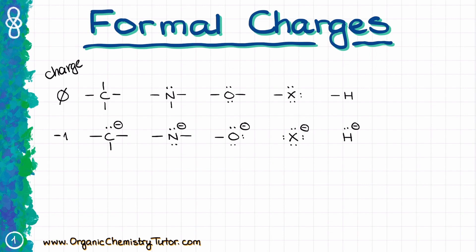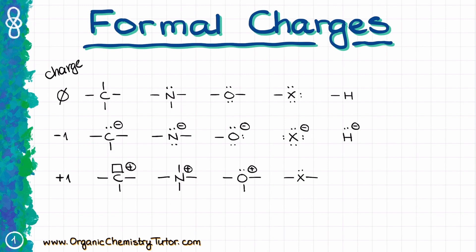When it comes to positively charged species, things get a little more interesting. For carbon, we'll still have three bonds and an empty orbital, shown here as a little box. For nitrogen, we'll typically see four bonds. For oxygen, we'll have three bonds and an electron pair. Halogens when positively charged will have two bonds and two electron pairs. And finally, hydrogen has no bonds — it becomes our proton.